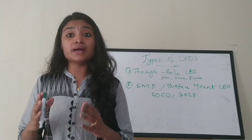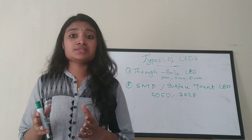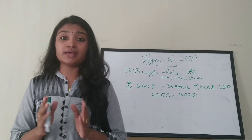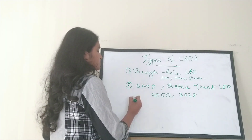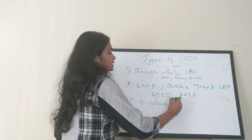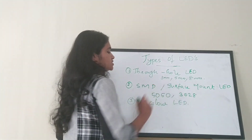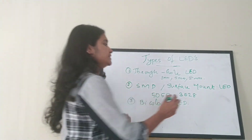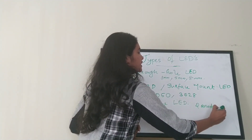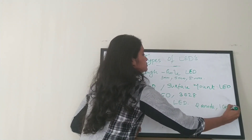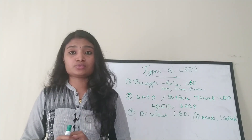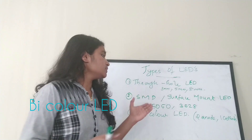The next type is bi-color LEDs. From the name itself it is clear that it can emit two colors — that is why it is called a bi-color LED. These LEDs consist of three leads: two anodes and one cathode.